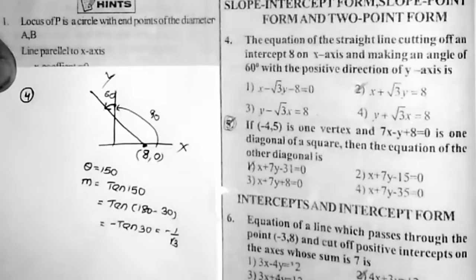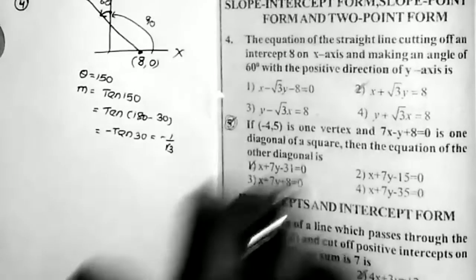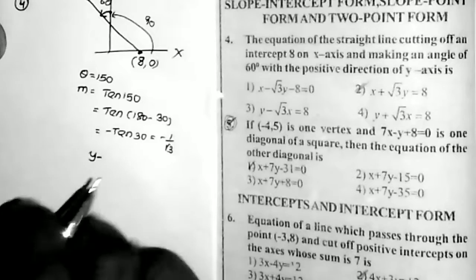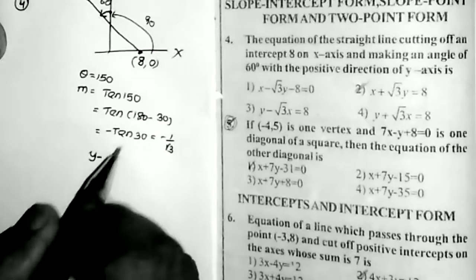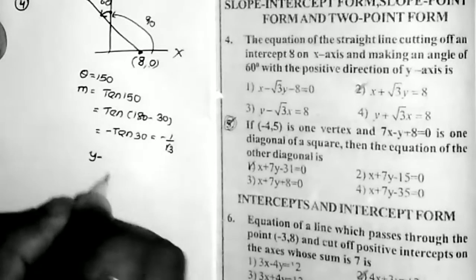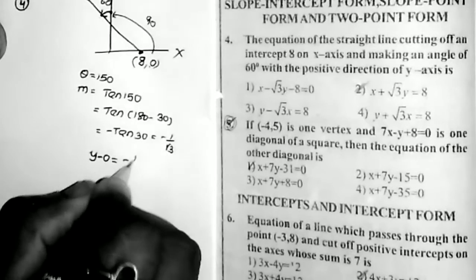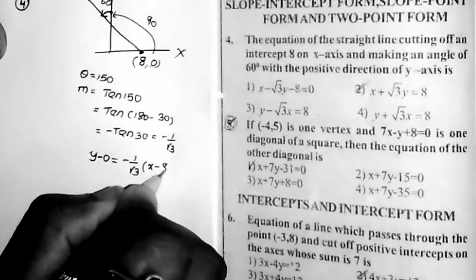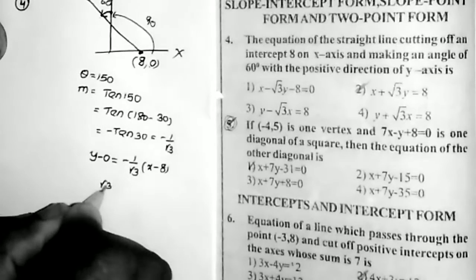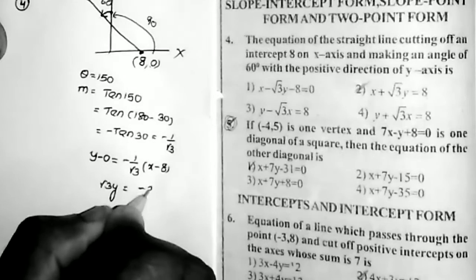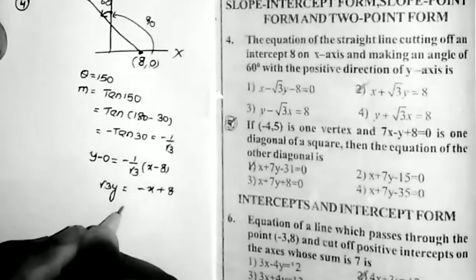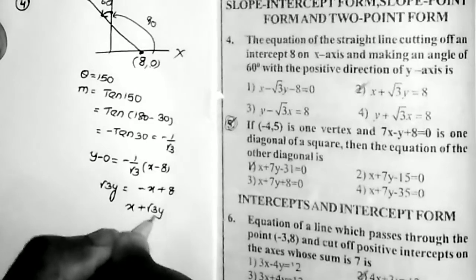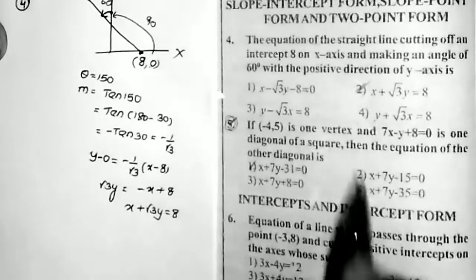Now finding the equation of the line using y − y1 = M(x − x1) with point (8, 0): y − 0 = (−1/√3)(x − 8). Taking the cross product: √3 y = −x + 8. Therefore the answer is x + √3 y = 8.